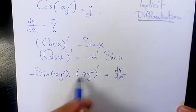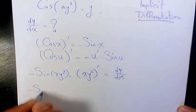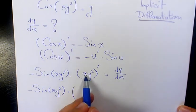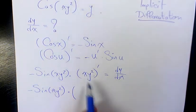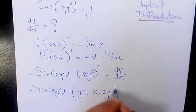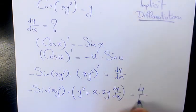Now let's find the derivative of this part, which is going to be negative sine x y squared times, here we need to use product rule, derivative of x is 1 times y squared plus x times derivative of y squared, which is 2y dy over dx, equals dy over dx.